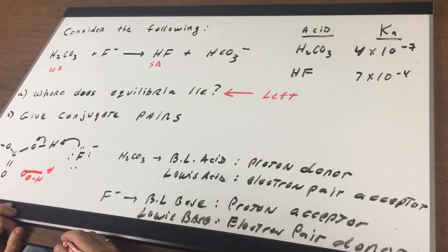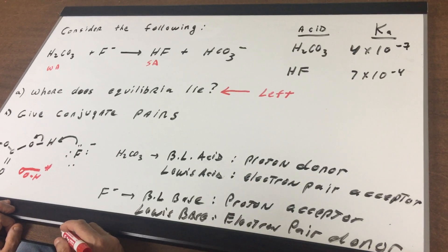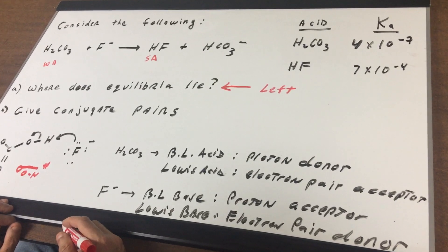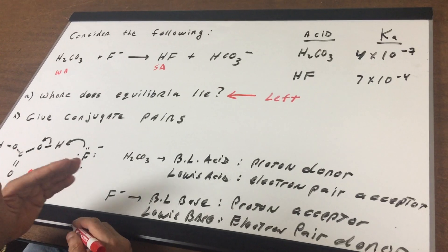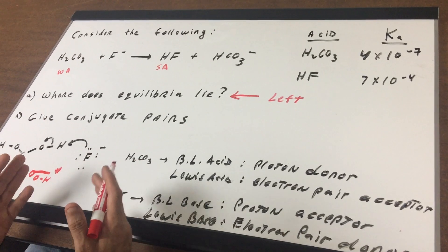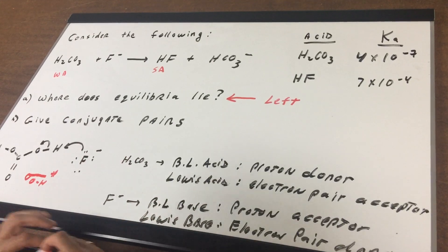The same thing would have been if I gave you pKa values. Remember, you always go from the small pKa to the large, because that means you're going from strong to weak.